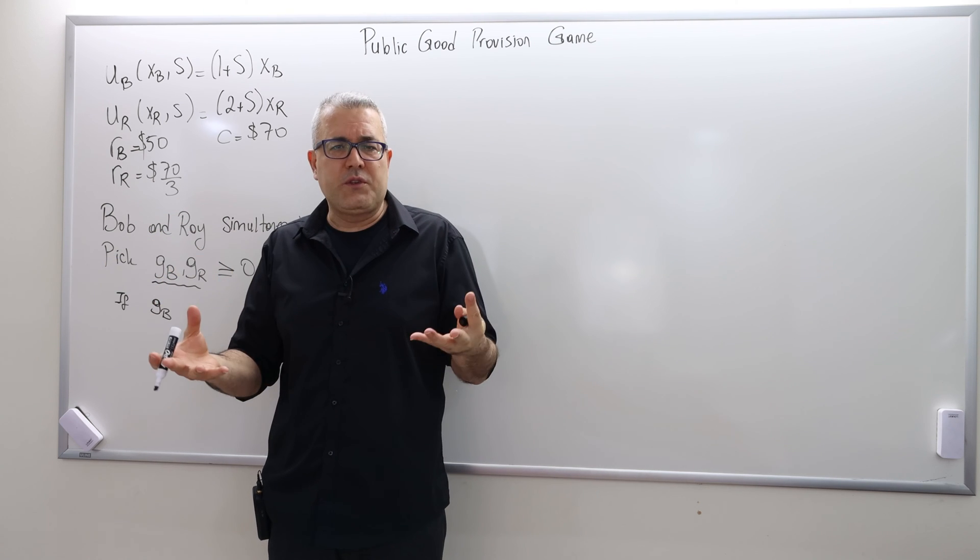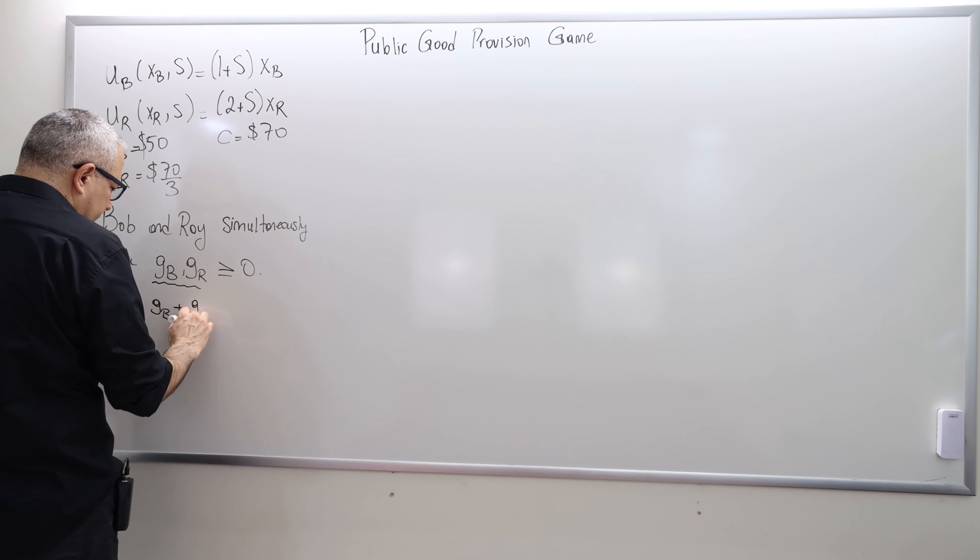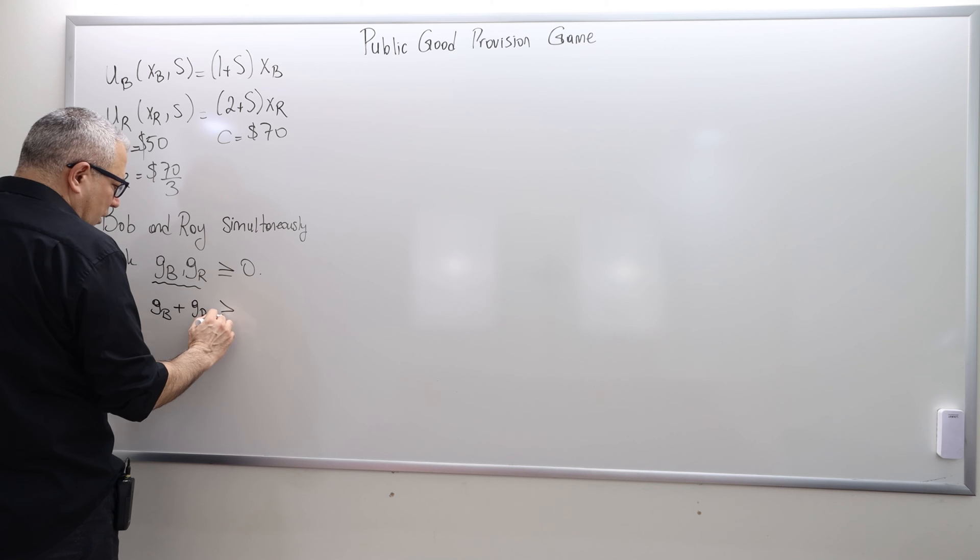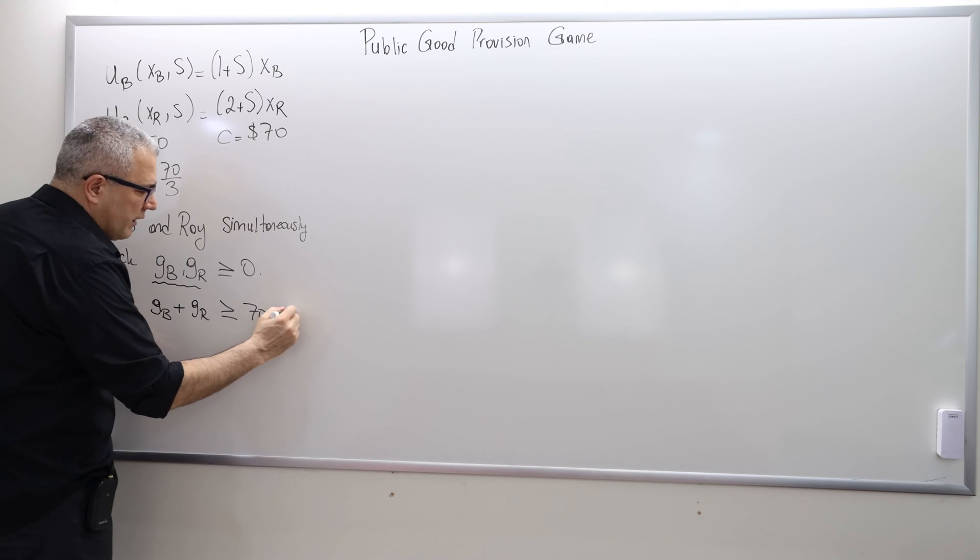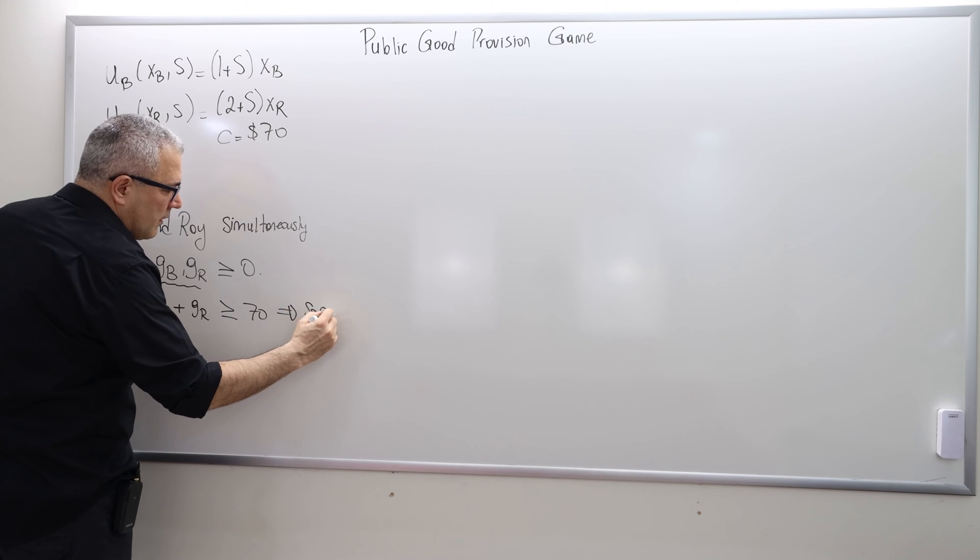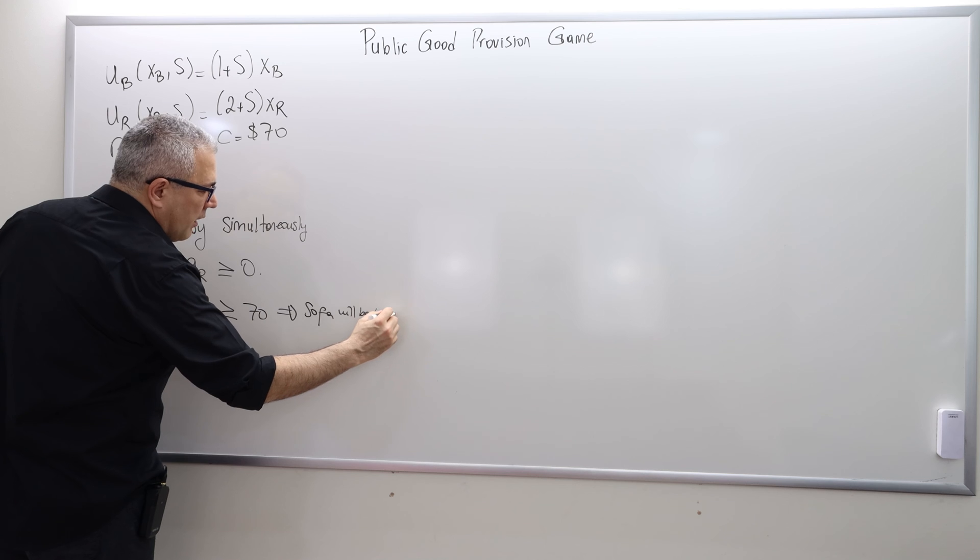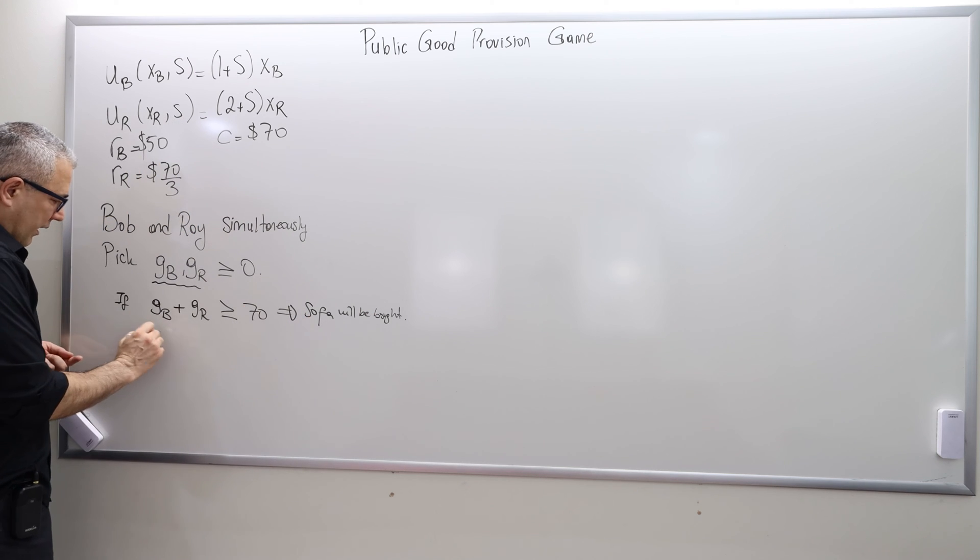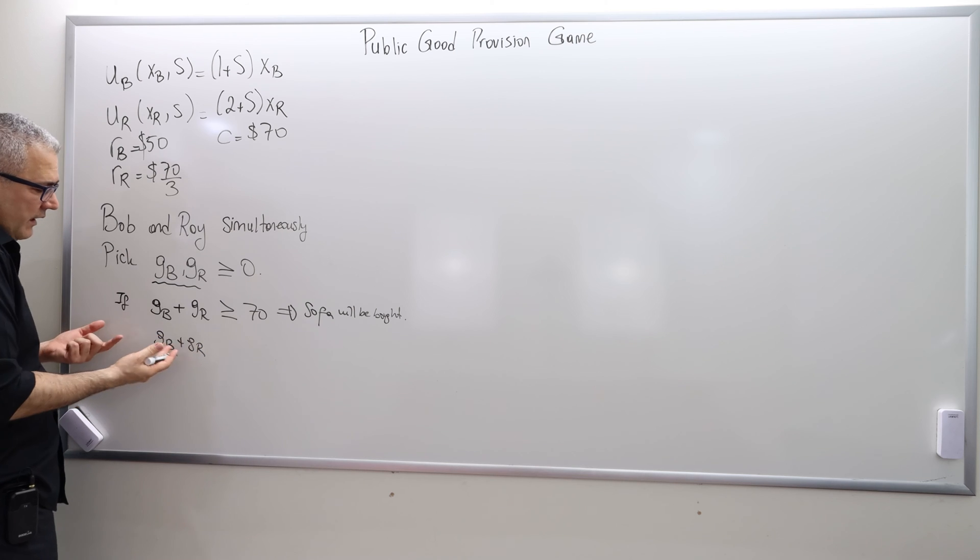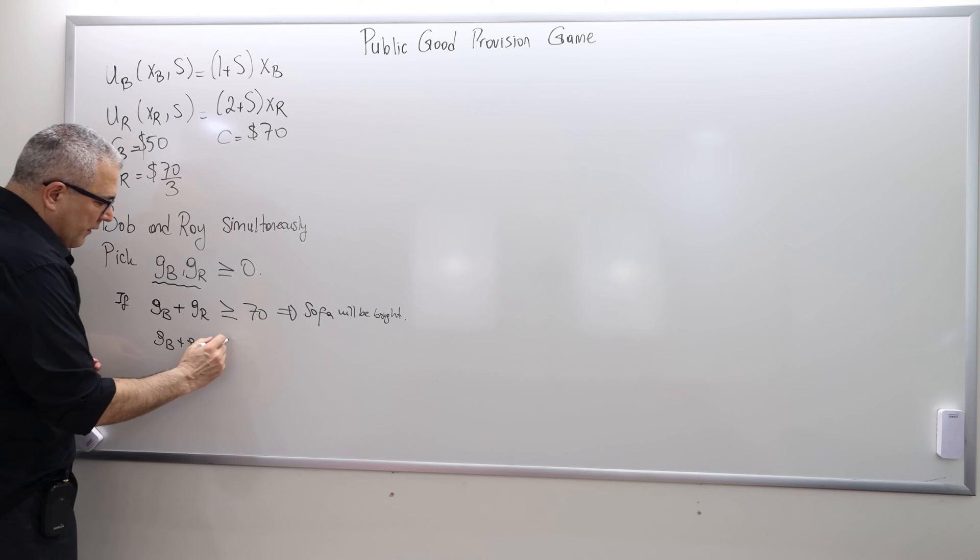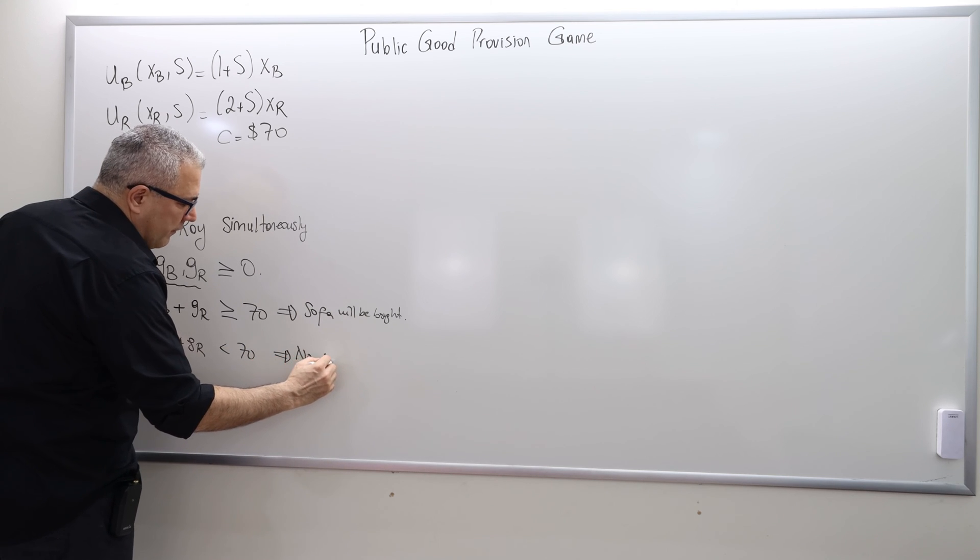The rules are kind of obvious I think. So again, they simultaneously and independently pick GB and GR. That's it, that's the end of the game. Those choices will be revealed. If those numbers add up to something more than the cost of the sofa, which is $70, then sofa will be bought. Otherwise, if they don't collect enough money, so it's less than $70, then there's going to be no sofa.